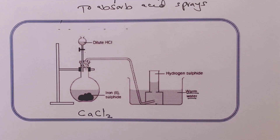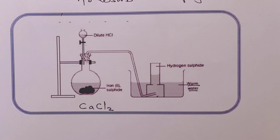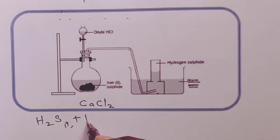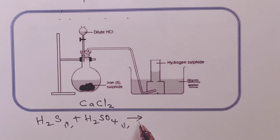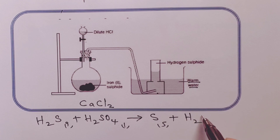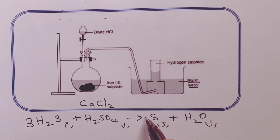We are not using concentrated sulfuric acid to dry the gas because there would be a reaction between the gas and sulfuric acid. The reaction would be as follows: hydrogen sulfide would be oxidized to sulfur and sulfuric acid reduced to water. The equation would be balanced with a 3 on hydrogen sulfide, a 4 on sulfur, and a 4 on water.